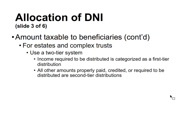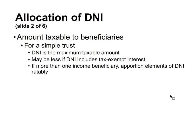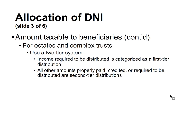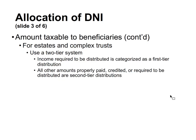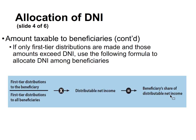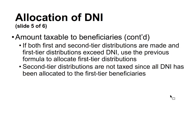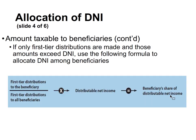For estates and complex trusts, a two-tier system is used. The first tier is income required to be distributed; the second tier is all other amounts of property paid, credited, or required to be distributed. If only first tier distributions exist, the beneficiary's share of DNI equals: (first tier distributions to the beneficiary ÷ first tier distributions to all beneficiaries) × DNI. If both tiers exist and first tier distributions exceed DNI, that same formula allocates the first tier, and second tier distributions are not taxed since all DNI has been allocated to first tier.